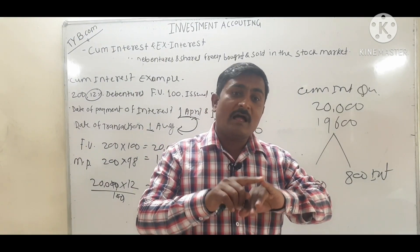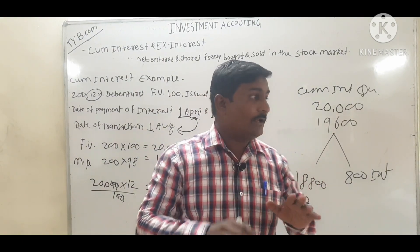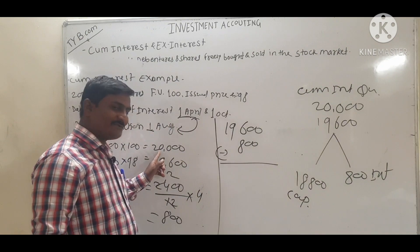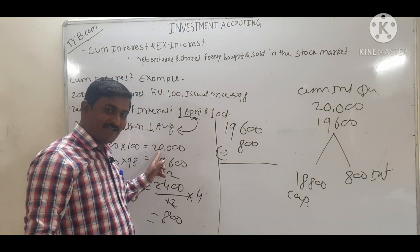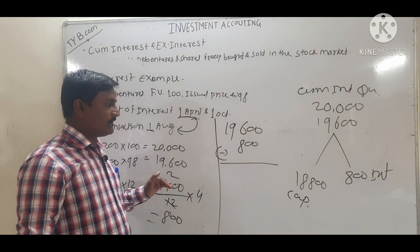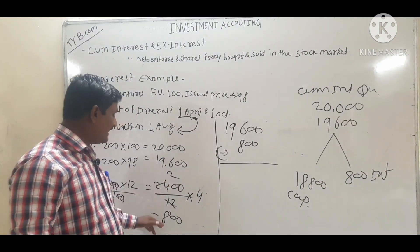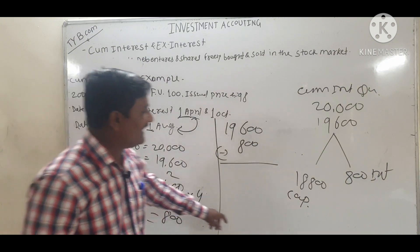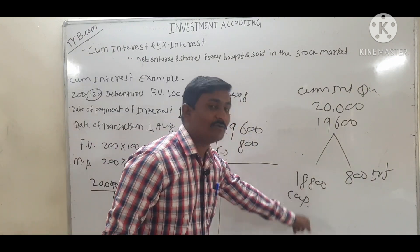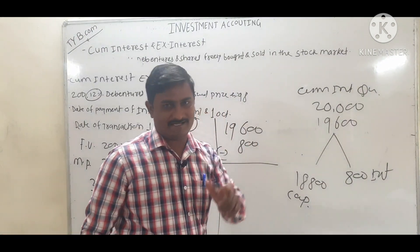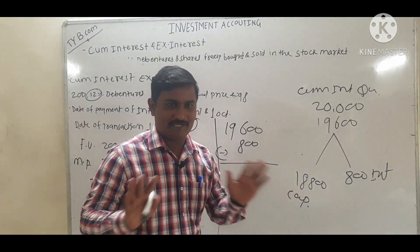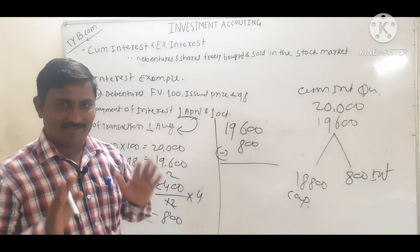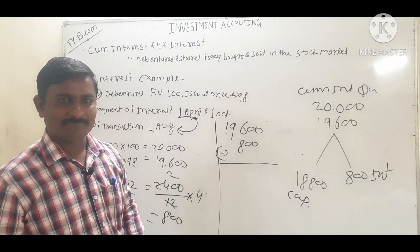In the capital column I will write ₹20,000, in the interest column I will write ₹800, and in capital I will write ₹18,800. It is very simple and easy.